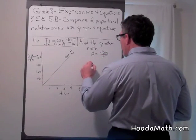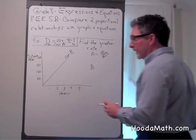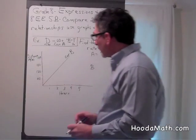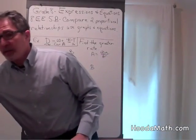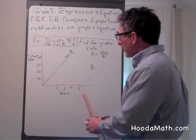But how do we find the rate for car B? Well, what we have to do is look at our graph, and the easiest is to find the unit rate.